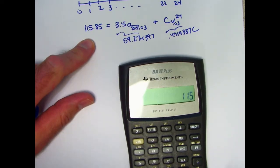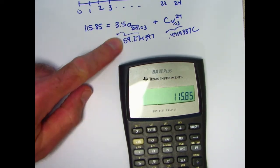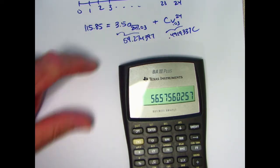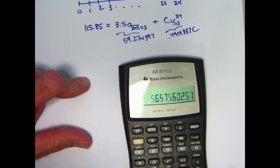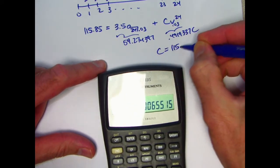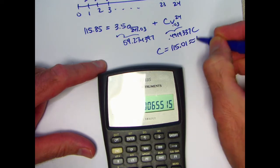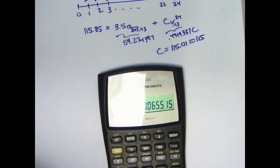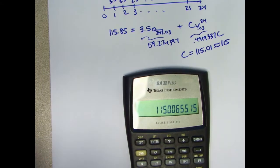So then I have to take 115.85, subtract what's in register 1, then divide by what's in register 2. C comes out to be $115.01, probably close enough to 115 that on a multiple choice, they'd probably round it to $115.